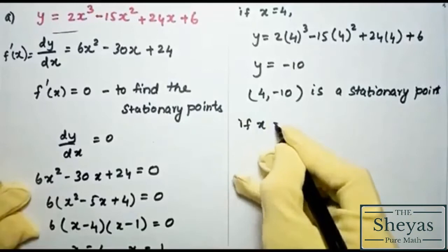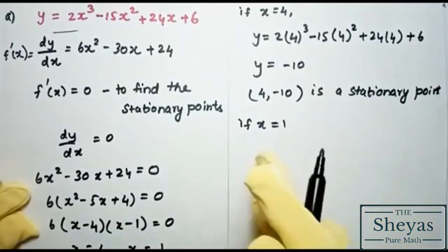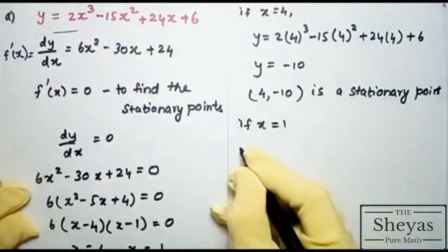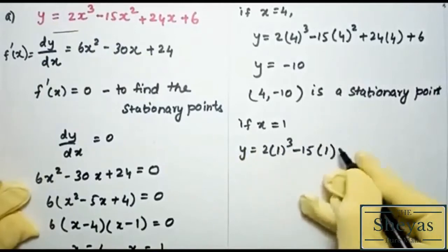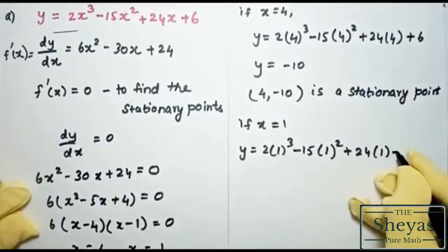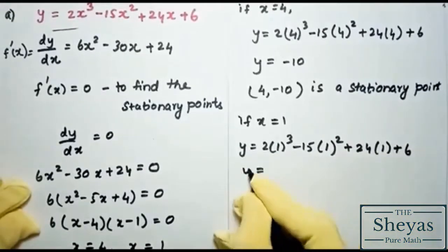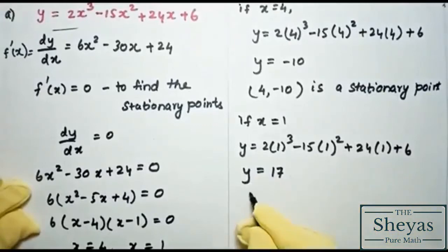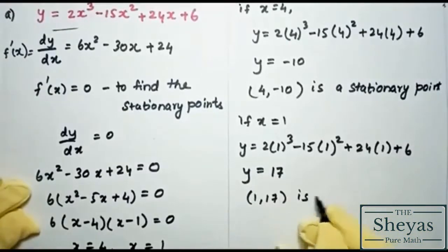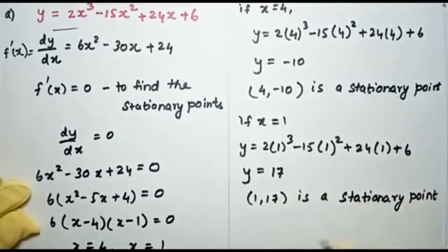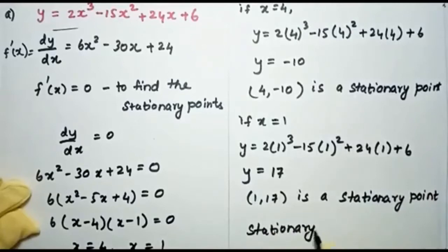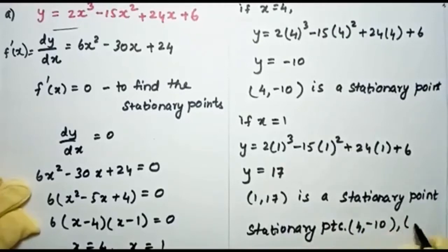Now taking x = 1 and substituting into y: y = 2(1)³ − 15(1)² + 24(1) + 6. When you calculate this you get y = 17. So (1, 17) is also a stationary point. We have found two stationary points: (4, −10) and (1, 17).